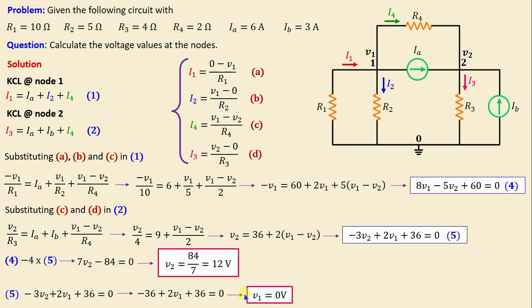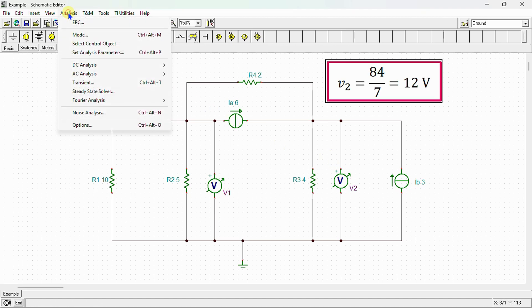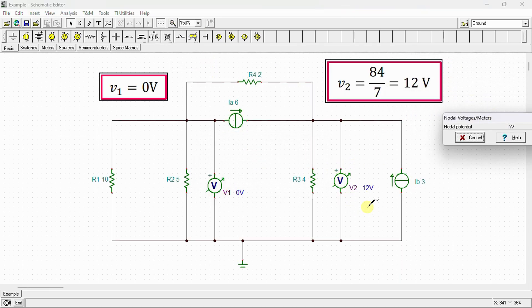After completing the calculations, we conduct a simulation using SPICE to verify our results. Now let's proceed to the SPICE environment. This is our network drawn in the SPICE simulator: the independent current sources Ia and Ib, resistors R1, R2, R3, and R4. I connect voltmeters to measure the node voltages V1 and V2. Let's run the analysis to calculate nodal voltages. We can see here that V2 = 12 volts and V1 = 0 volts.